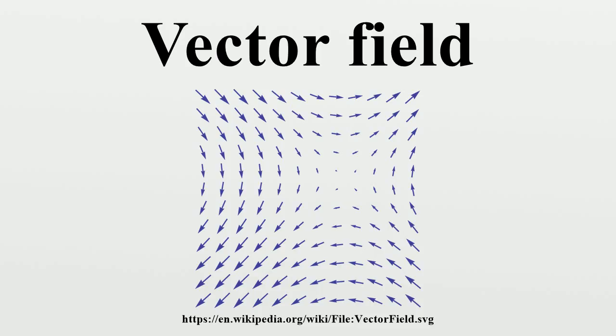Vector fields are often discussed on open subsets of Euclidean space, but also make sense on other subsets such as surfaces, where they associate a vector tangent to the surface at each point.